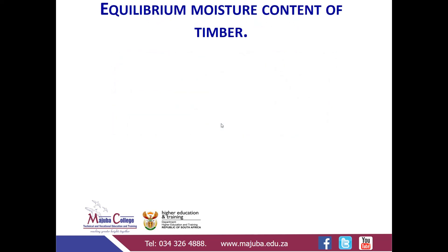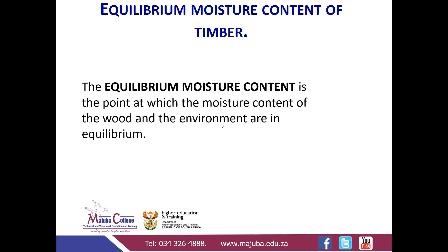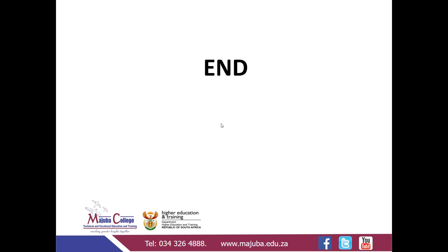Last but not least: equilibrium moisture content. Relating to density, your timber needs to maintain an equilibrium moisture content. Once you lose your moisture content, you get distortions. Like your dough — when it's raining and it absorbs water, it swells, which means it increases its moisture content. You need to maintain the moisture content. The moisture content of timber must be in equilibrium at all times. Equilibrium moisture content is the point at which the moisture content of the wood and the environment are in equilibrium. That brings us to the end of our first unit of timber.